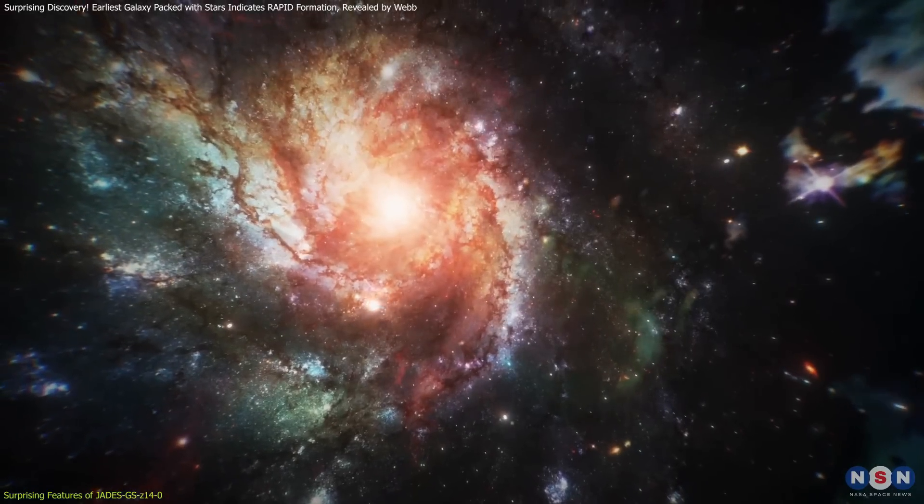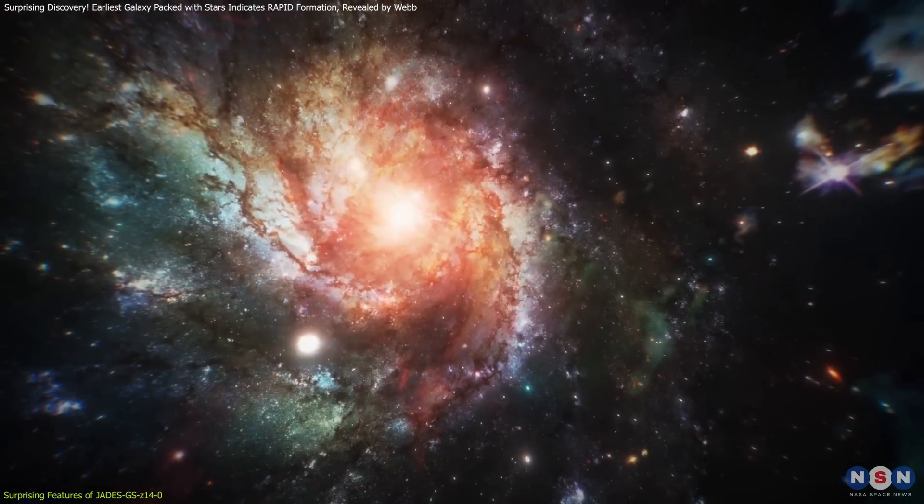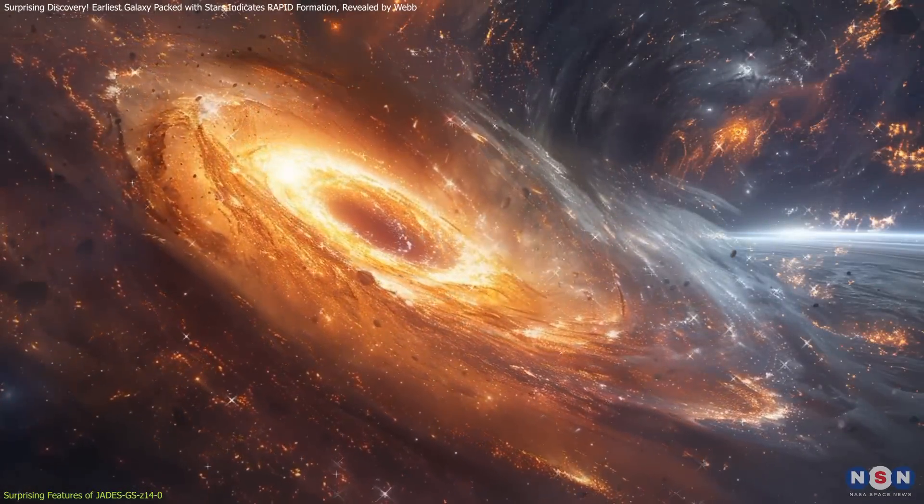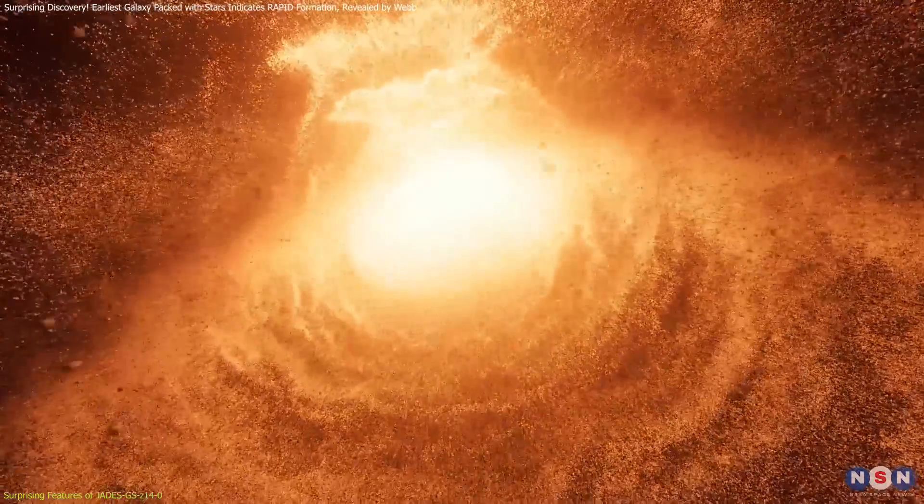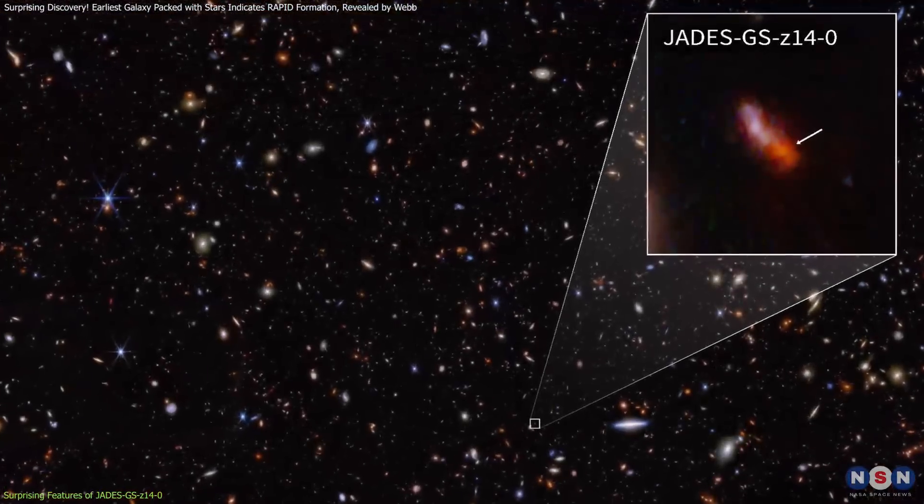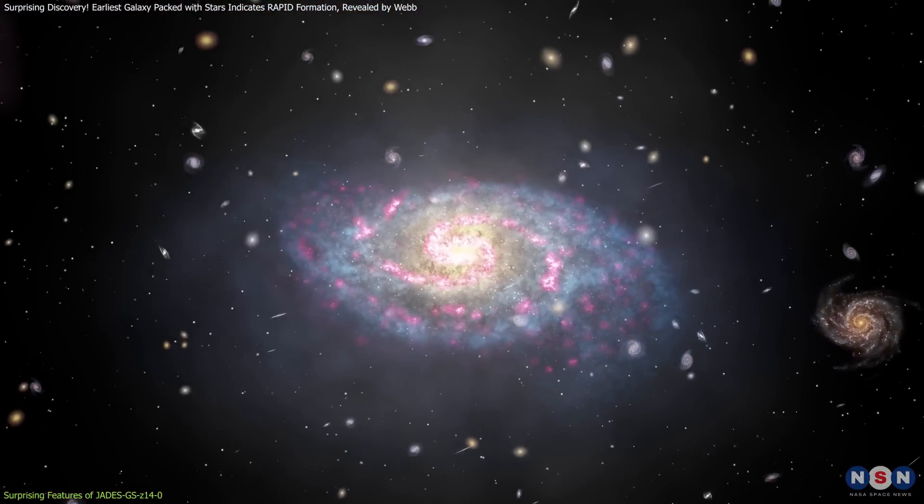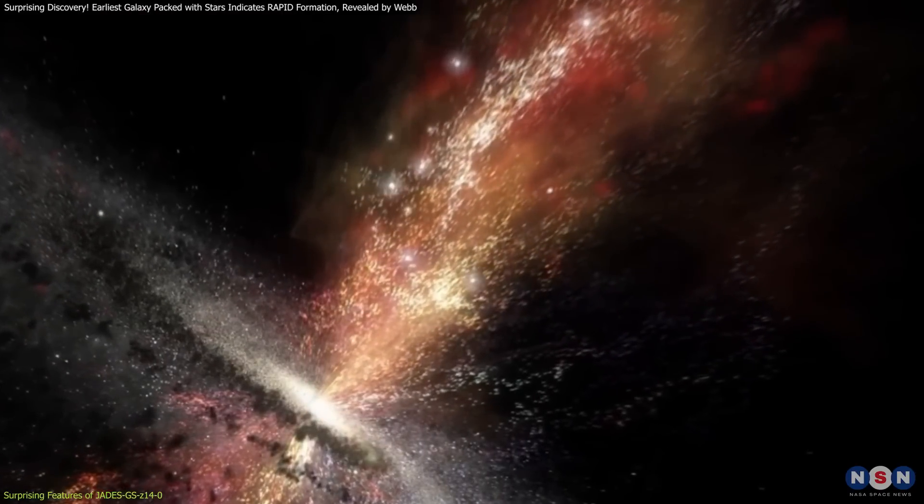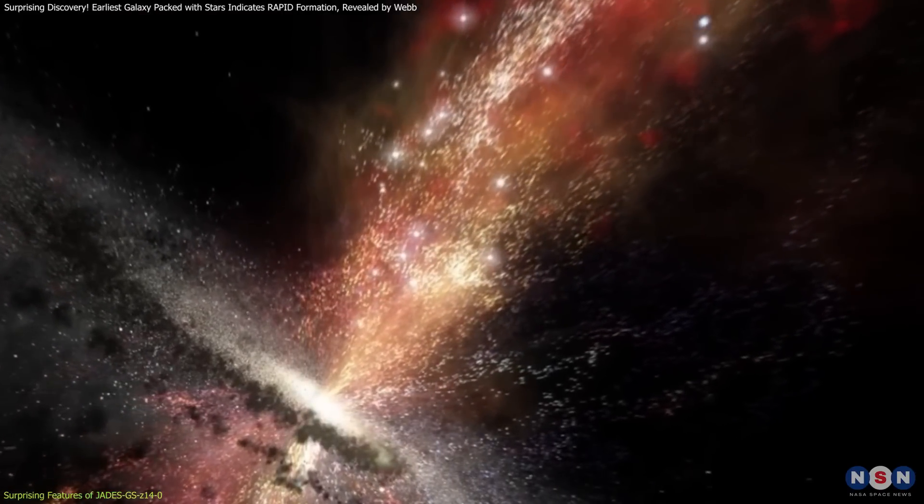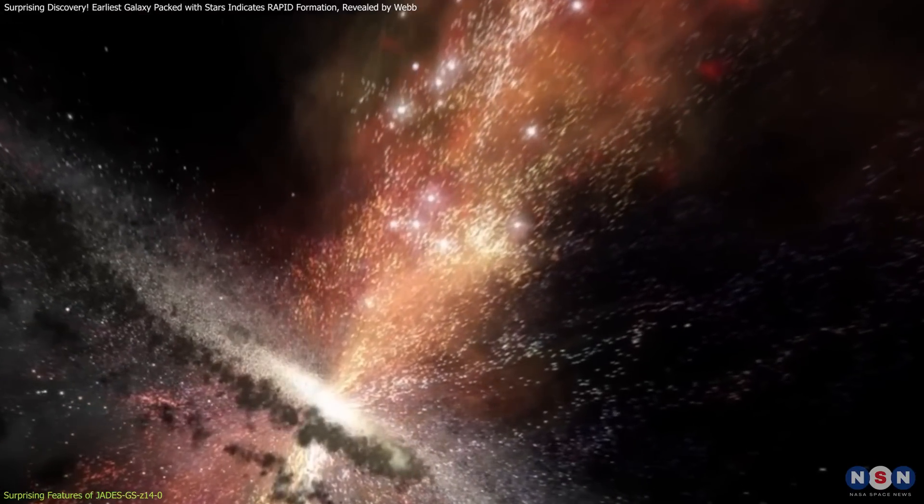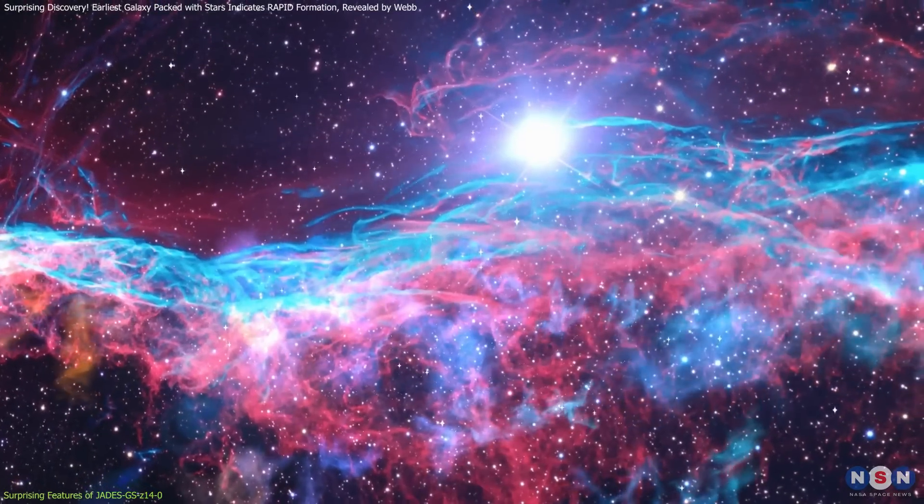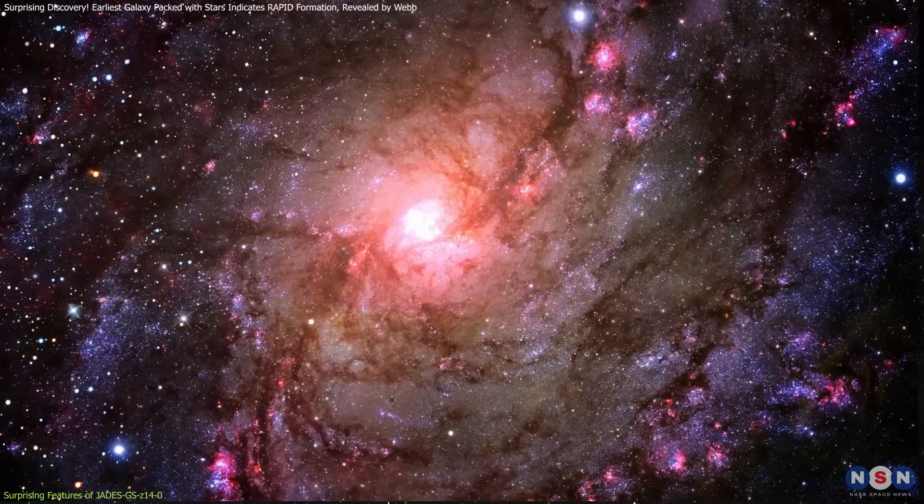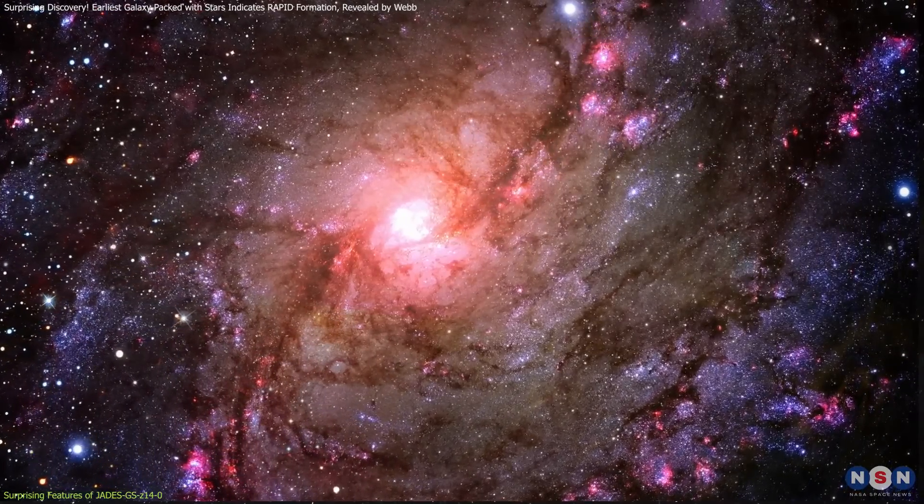This finding is quite surprising because most of the brightest galaxies we observe have their luminosity powered by a central black hole, which creates a quasar. However, in JADES 14-0, the light primarily comes from ongoing star formation. This suggests that there's a highly active and rapid process of new stars being born in this ancient galaxy. It highlights a dynamic period of stellar creation that occurred much earlier in the universe's history than previously thought.